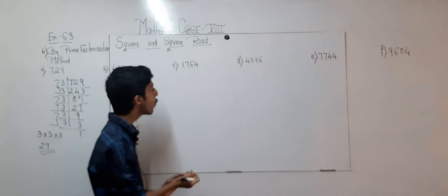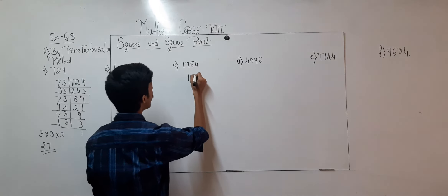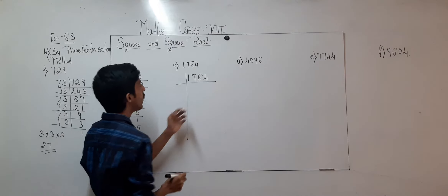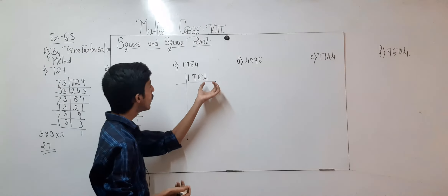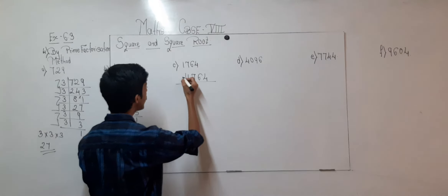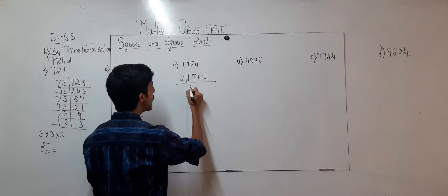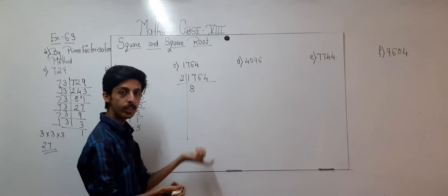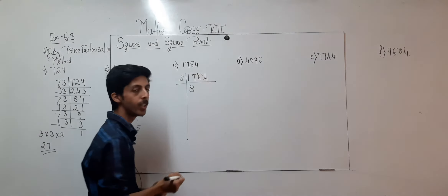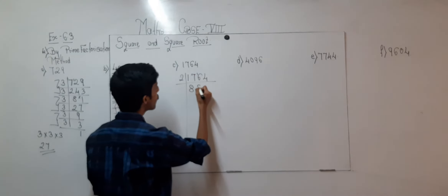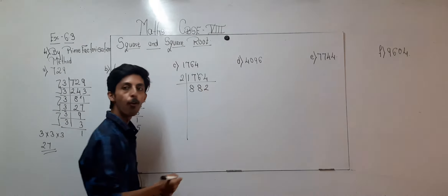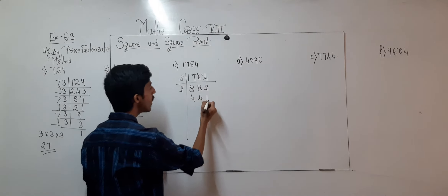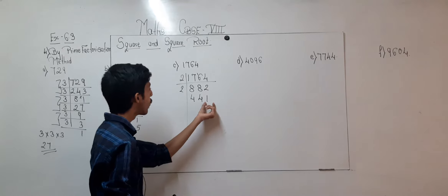Now moving on to question number C, that is 1764. The last digit is 4, which is coming in the table of 2. In the table of 2, 1 is not coming, so we take 2 digits: 2 times 8 is 16, remaining 1; again 16, 2 times 8 is 16, 2 times 2 is 4. Again the table of 2 is coming: 2 times 4 is 8, again 4, and again 1 remaining.